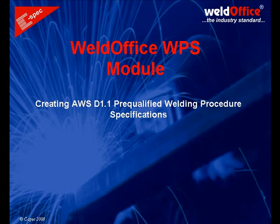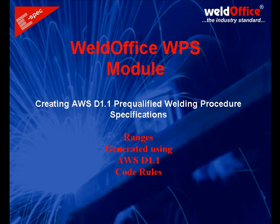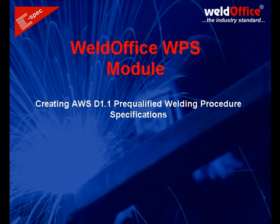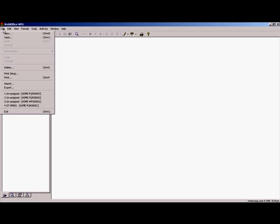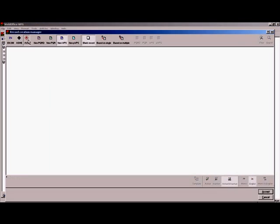The World Office WPS module allows for efficient and accurate creation of AWS D1.1 pre-qualified welding procedure specifications. The allowable ranges for pre-qualification in accordance with the AWS D1.1 rules are automatically generated in the document, allowing for easy creation of AWS D1.1 pre-qualified welding procedures.